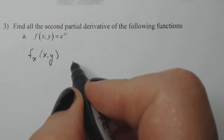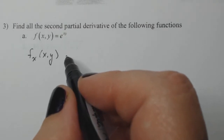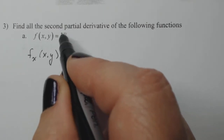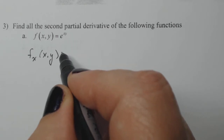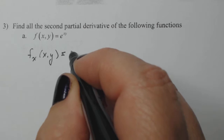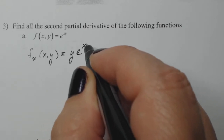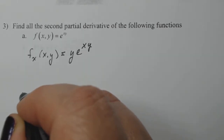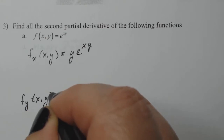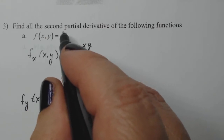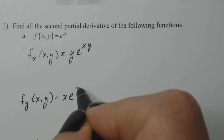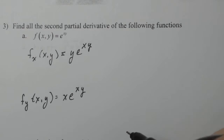So this is e to the xy — it's really tiny, but you can see it on your handout. I have to take the derivative of the power with respect to x. So y is the constant, and the derivative with respect to x is one. So here I have y e to the xy. And then f sub y is the derivative of the power with respect to y, which is x times the original exponential. So those you've seen before.